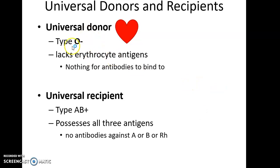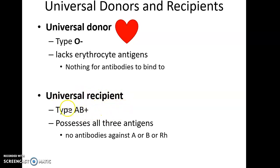The universal donor is O negative — they do not have any antigens, so they can give blood to absolutely anybody. The universal recipient is AB positive — they can receive blood from anybody since they have all the antigens. They can only give blood to another AB positive person, but they can receive from any blood type.